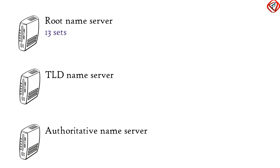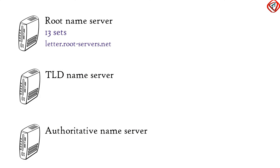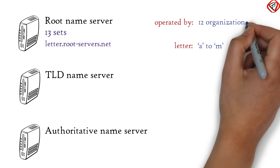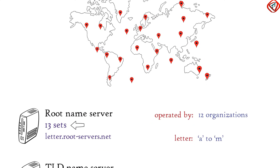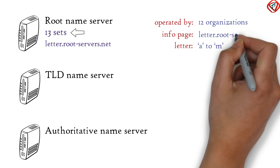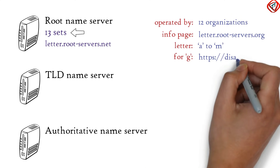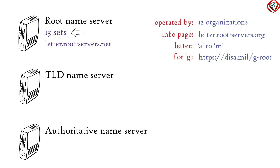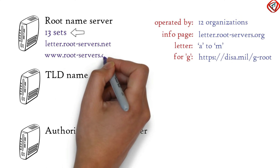There are 13 sets of root name servers, logically named as letter.root-servers.net, where letter ranges from A to M, and are operated by 12 different organizations. Each set has a number of servers placed around the world. An informational page exists for all root name servers at address letter.root-servers.org, where letter ranges from A to M, except G. Details of all root name servers can be found at www.root-servers.org.